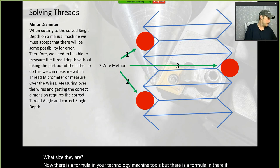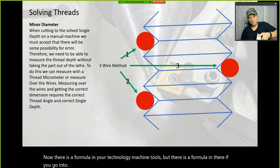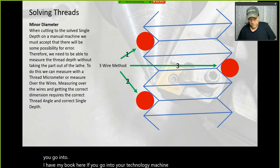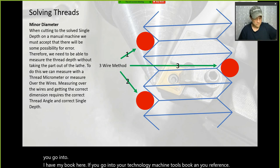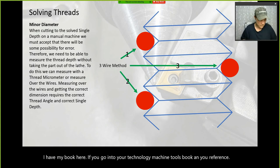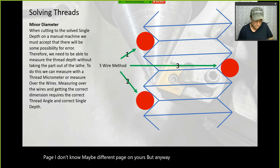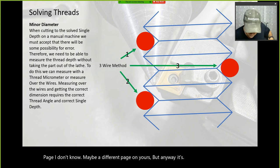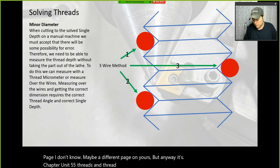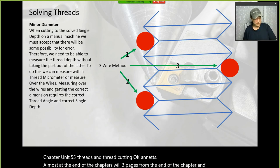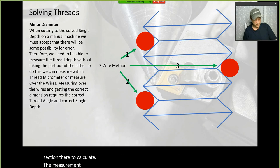There's a formula in your Technology of Machine Tools book — in Unit 55, Threads and Thread Cutting, about three pages from the end of the chapter — to calculate the measurement over the wires. You can also find it in the Machinist's Handbook. The formula has two parts: first, solving the best wire size, and then solving the measurement over the wire.